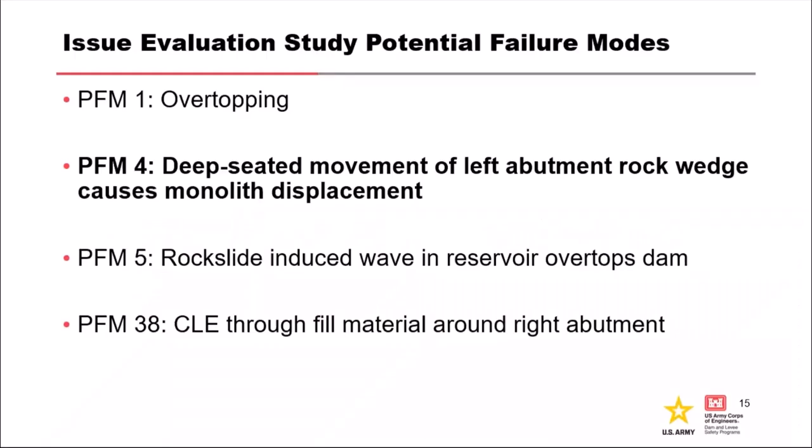Getting into the issue evaluation study - these are the four failure modes we've been evaluating. We're going to focus on PFM4, but PFM1 is overtopping, which is interesting because we have that common fill soil 11 feet over on the right abutment. That causes a double-breach scenario where you can lose the soil but also lose the rock, so consequences for those two things are different. PFM5 is a rock-slide-induced wave that overtops the dam - that was the focus prior to and during construction, especially after that shallow wedge failed, and physical models were built at the Waterways Experimental Station. PFM38 is the concentrated leak erosion through the fill material on the right abutment.